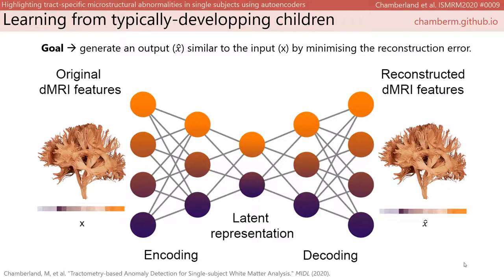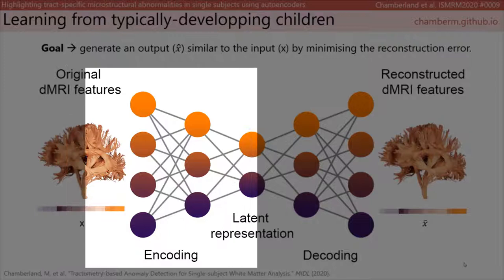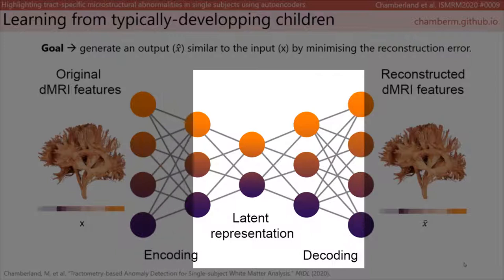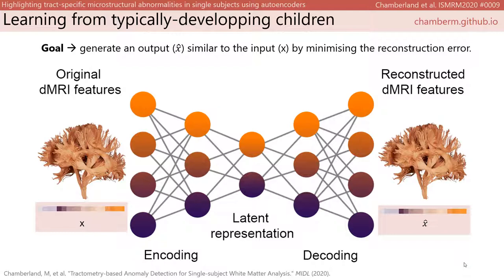The aim of an autoencoder is to learn a representation — the encoding part — for a set of data, typically for dimensionality reduction. This is done by slowly compressing the input via a series of layers up to a bottleneck layer. The decoding side uses a symmetric architecture, where the autoencoder tries to regenerate the original input by minimizing the reconstruction error between the two. Given a new input, we can use this reconstruction error as a distance metric that quantifies the degree of deviation of that subject with respect to the learned group representation.